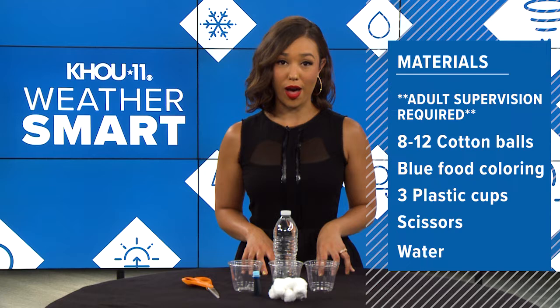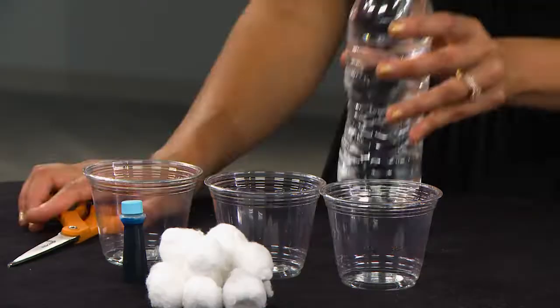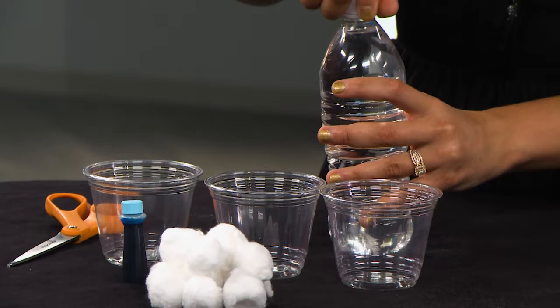Now let's go over the materials you'll need for this experiment. First things first, adult supervision is required. Then you're going to need about eight to twelve cotton balls, blue food coloring, three plastic cups, scissors, and water.